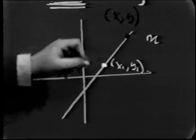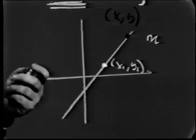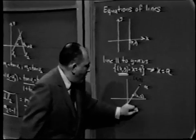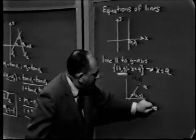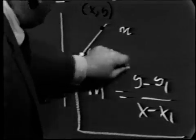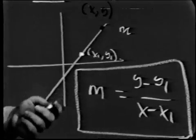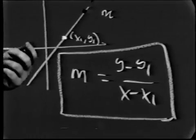Well, we already know that slope does not depend on which two points you pick. Consequently, since the slope of this line is m, the slope must also be y minus y1 over x minus x1. And this becomes the fundamental definition for the equation of a line which is not parallel to the y-axis.